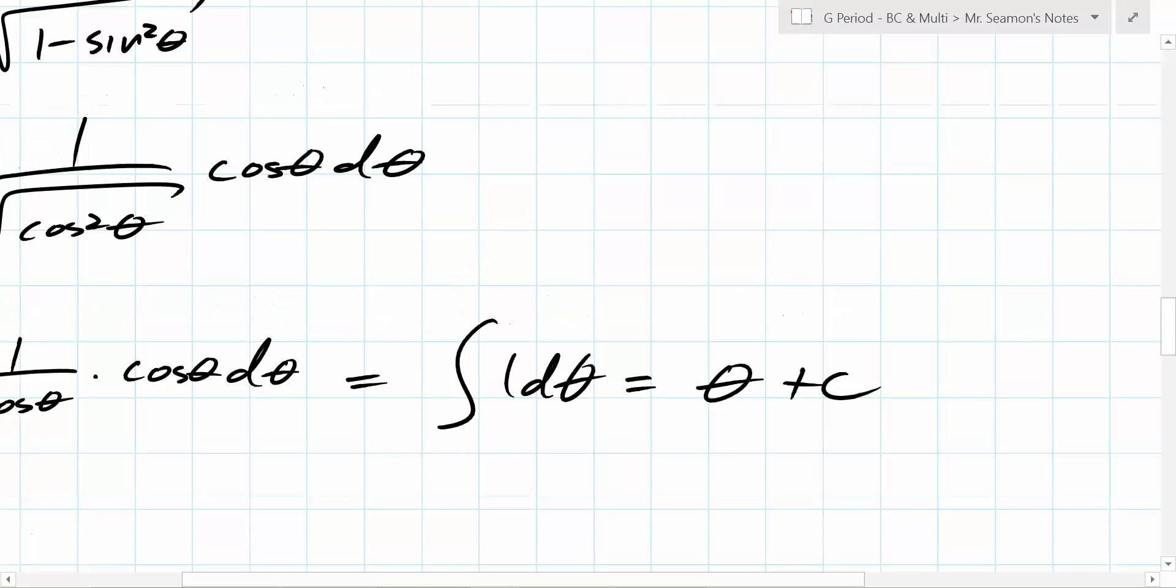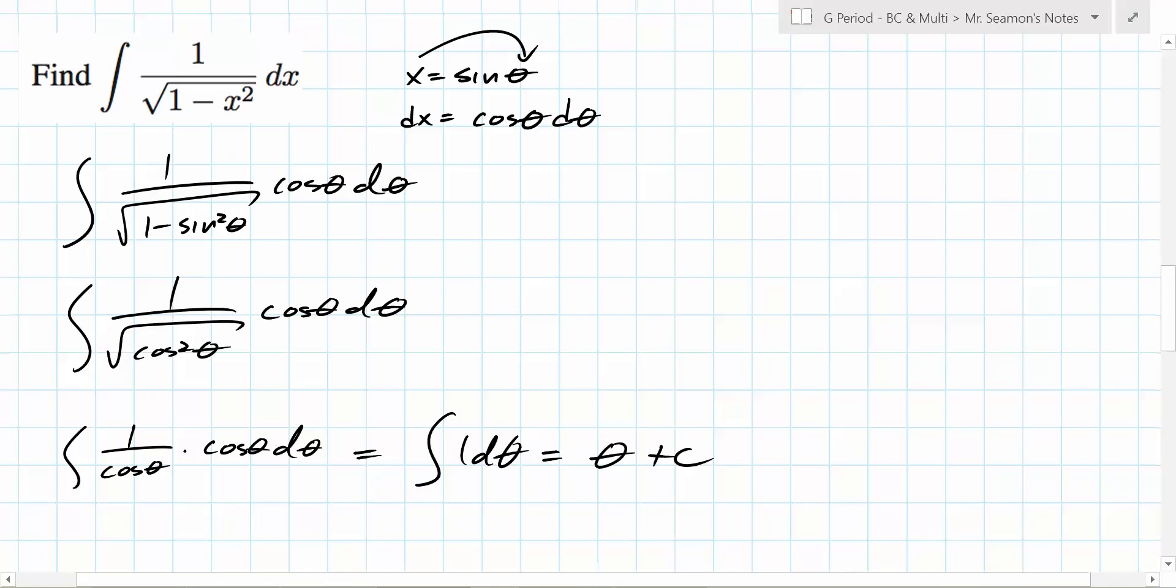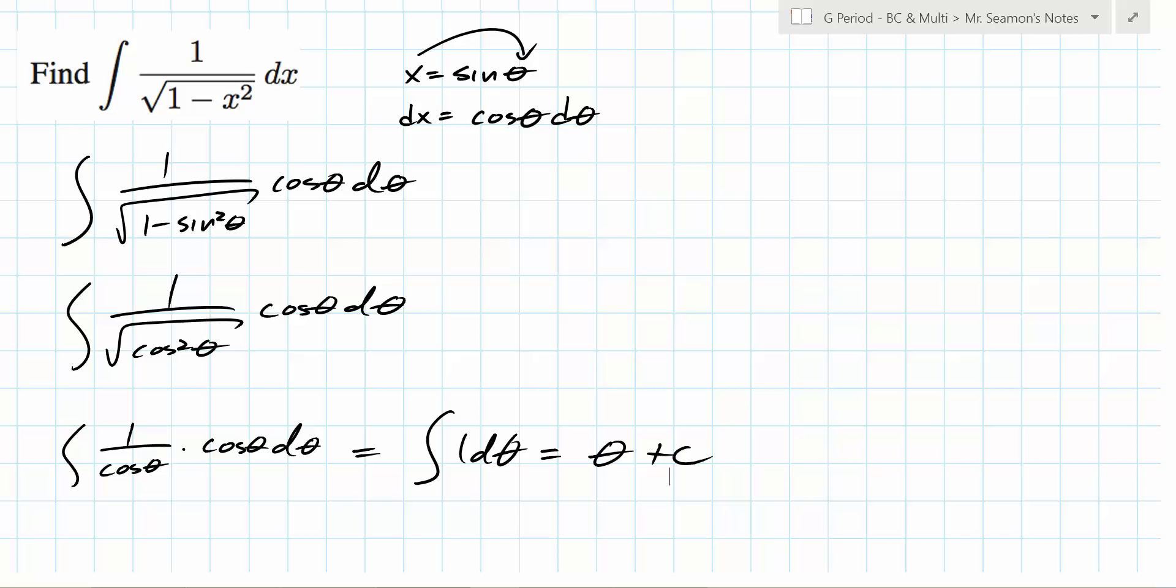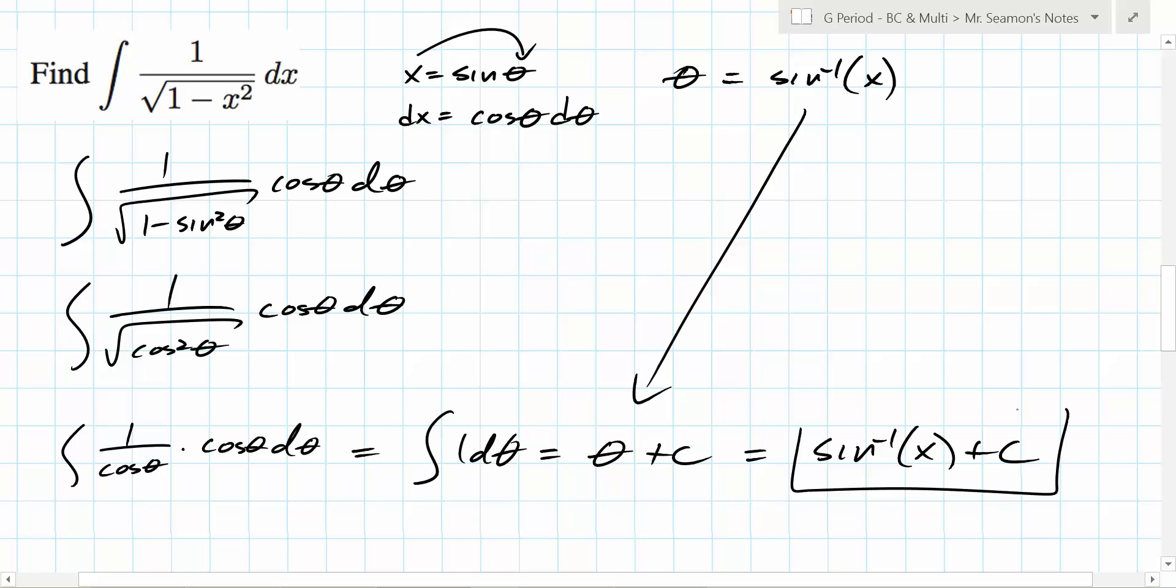But we're in theta. What are we in right now? Theta. We're in theta, correct? So if we wanted to go back to x, what would we need to do? So we know that theta equals sine inverse of x. So what do we get? Sine inverse of x plus C.